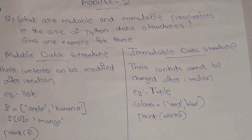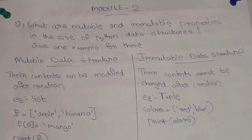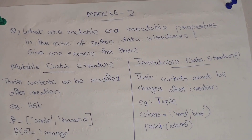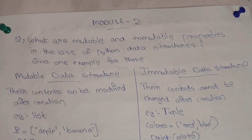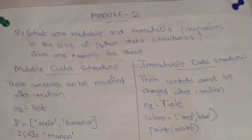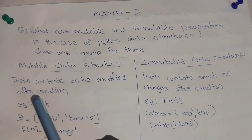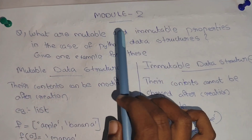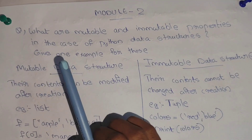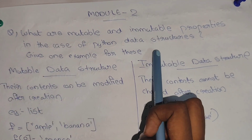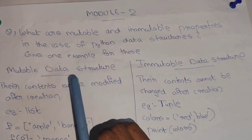Welcome back to our channel. Next, we will talk about the Programming Python module 2. We will talk about the 3rd question: what are mutable and immutable properties in the case of Python data structures? Give one example for these.